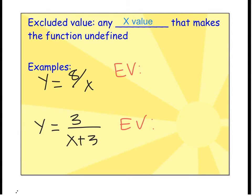Another term we're going to use is excluded value (EV) - any x value that makes the function undefined. For example, y equals 8 divided by x. Whatever x is, I'm dividing 8 by that. If I make x equal to 0, I'd be trying to do 8 divided by 0, which isn't possible. That makes the function undefined, so the excluded value is x equals 0.